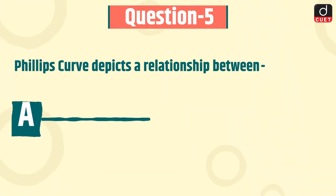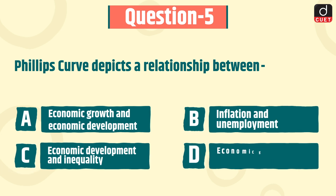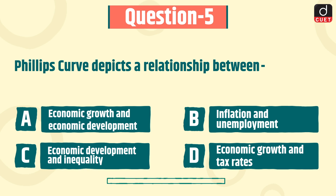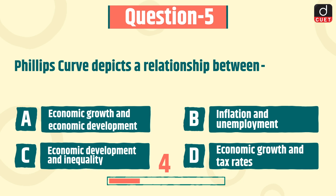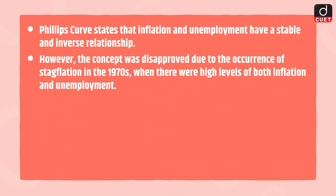The next question is: Phillips curve depicts a relationship between which of the following? Economic growth and economic development, inflation and unemployment, economic development and inequality, or economic growth and tax rates? The correct answer is option B, inflation and unemployment. The Phillips curve states that inflation and unemployment have a stable and inverse relationship. However, this concept was disproved due to the occurrence of stagflation in the 1970s, where there were high levels of both inflation and unemployment.